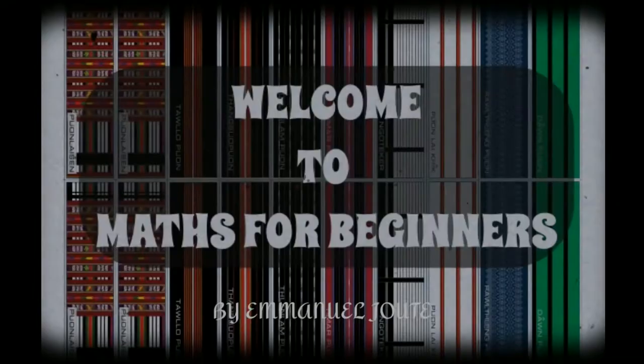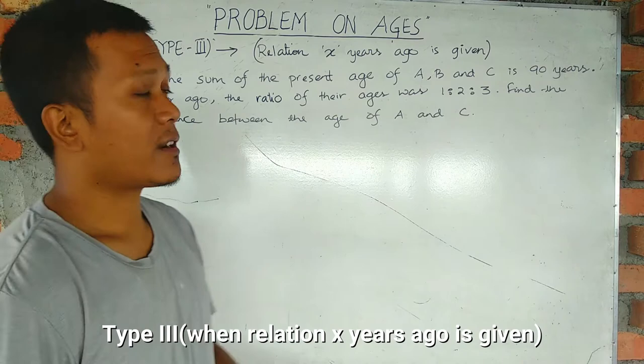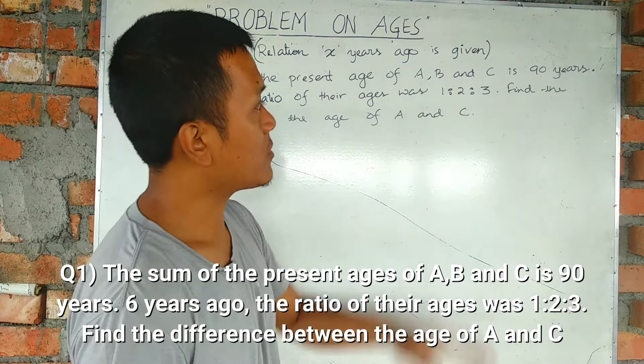What is the problem on age? Type 3. Type 3 is given in relation six years ago. The sum of the present age of A, B, and C is 90 years. Six years ago, the ratio of the ages was 1 is to 2 is to 3. Find the difference between the ages of A and C.